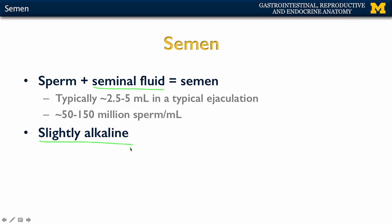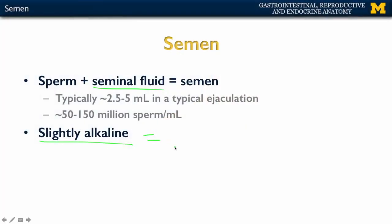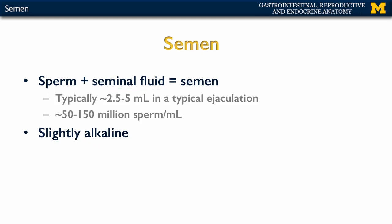When we were talking about the seminal vesicles, we talked about the more alkaline pH associated with that fluid. The importance of that alkaline pH is really to help neutralize or interact with the urethra — specifically the urine associated with the urethra — as well as the female vagina, which are both fairly acidic environments. So in order to protect the sperm, the seminal fluid, specifically the fluid coming from the seminal vesicles, will allow for protection of the sperm.